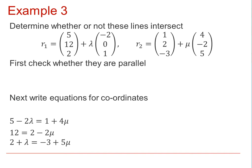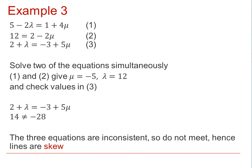For example, using just equations 1 and 2 would give mu equals minus 5 and lambda equals 12. And we can check these values in equation 3. However, this would give us 14 equal to minus 28, which is not possible.